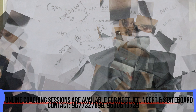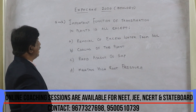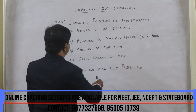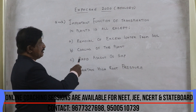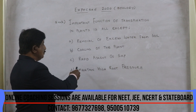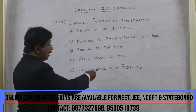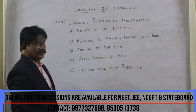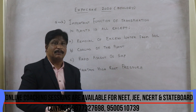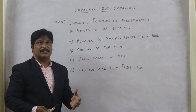The important function of transpiration in plants — all except: (1) removal of excess water from the soil, (2) cooling of the plant, (3) rapid ascent of sap, (4) maintaining a high root pressure. We know that transpiration is an important event that caters to the requirements of the plant.